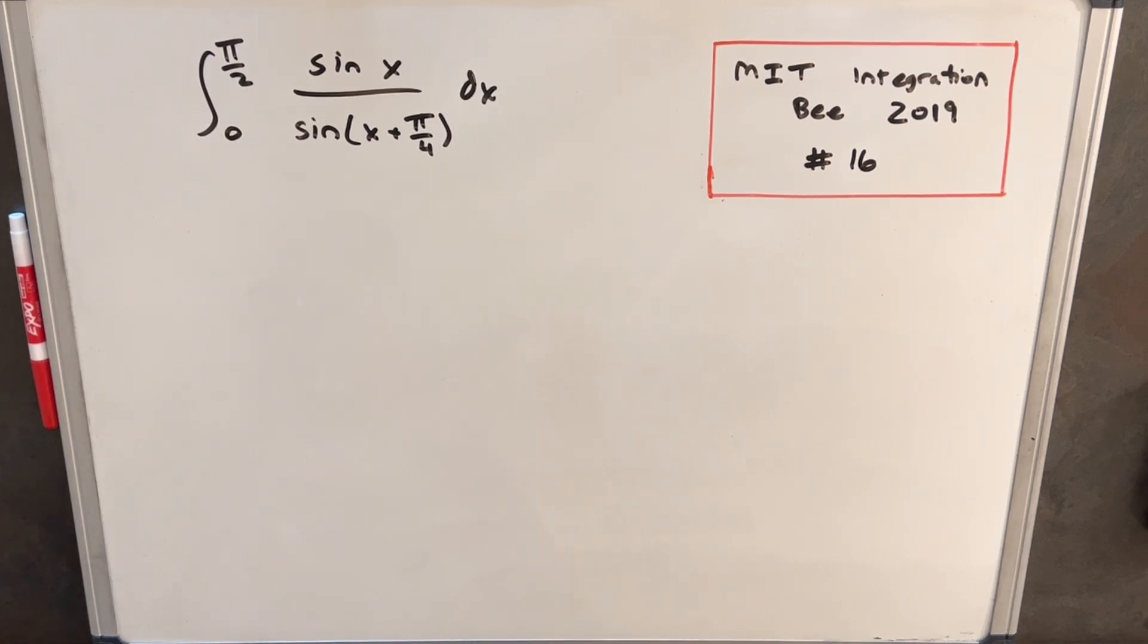Hey, we have on the board another integral from MIT Integration Bee 2019. This is problem number 16. We've got the integral from pi over 2 to 0 of sine x over sine x plus pi over 4.